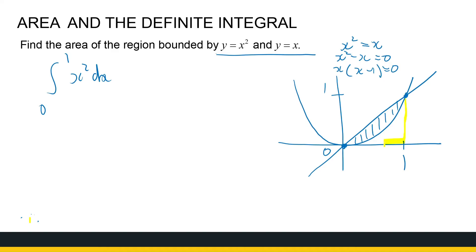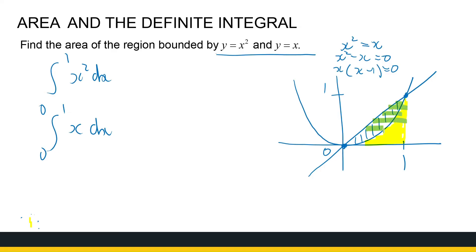The integral from 0 to 1 of x squared dx gives the area under x squared, and the integral from 0 to 1 of x dx gives the area under x. To get the area in between the two curves, I subtract the one from the other — I subtract the area under x squared from the area under x. So the area I'm looking for is the integral from 0 to 1 of x minus x squared dx.